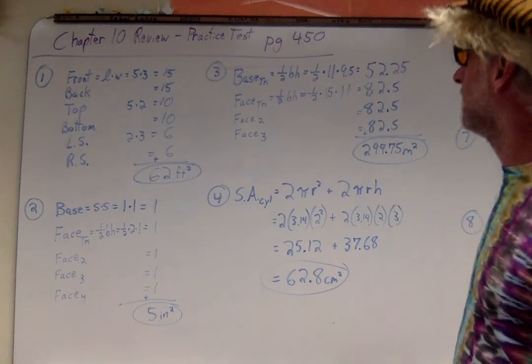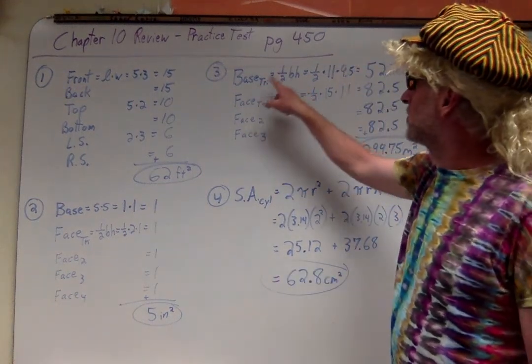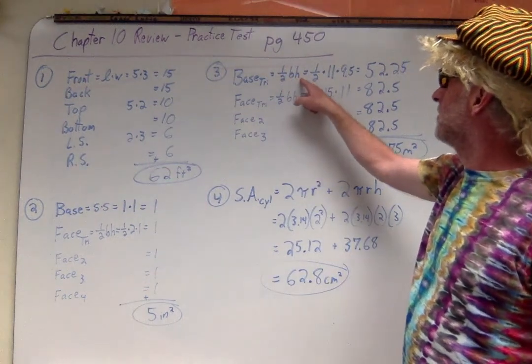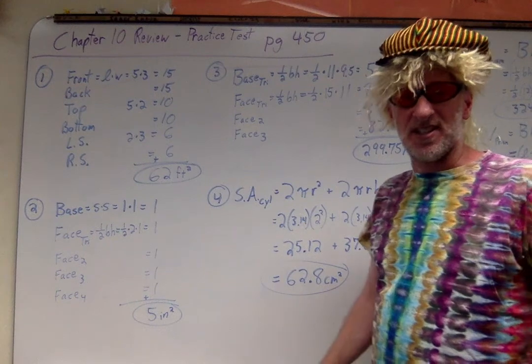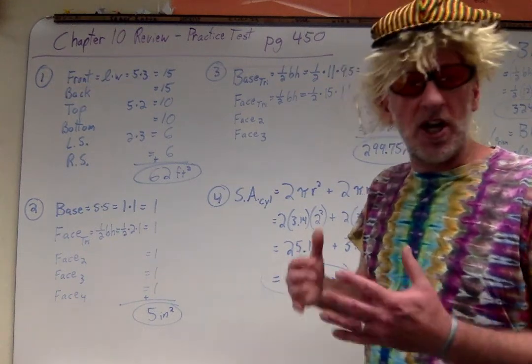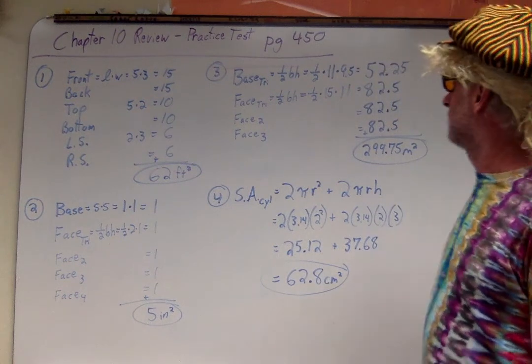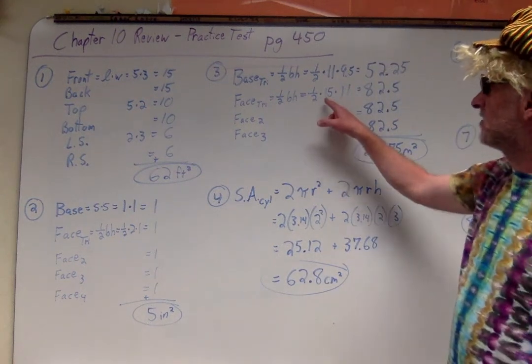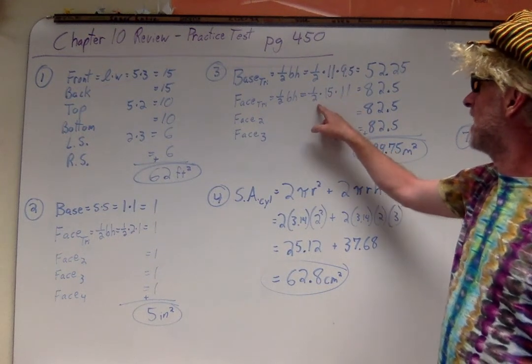Let's take a look at number three. We had a triangular pyramid. The base was a triangle, one-half the base times the height. Now we have three triangular faces. These were a little bit tricky to look at. I couldn't tell what numbers matched up to what dimension, so it's okay if this one's a little tricky for you everybody.